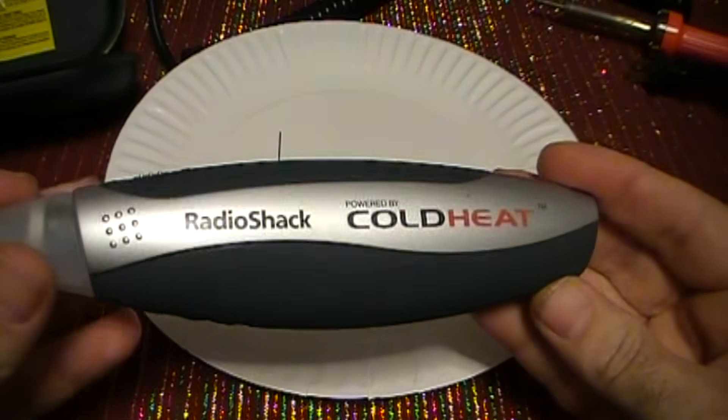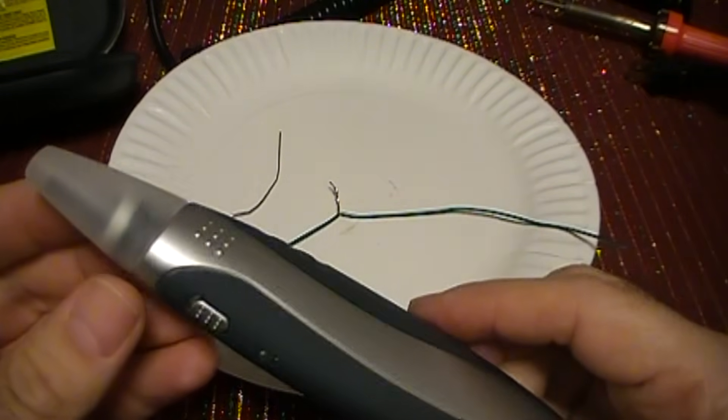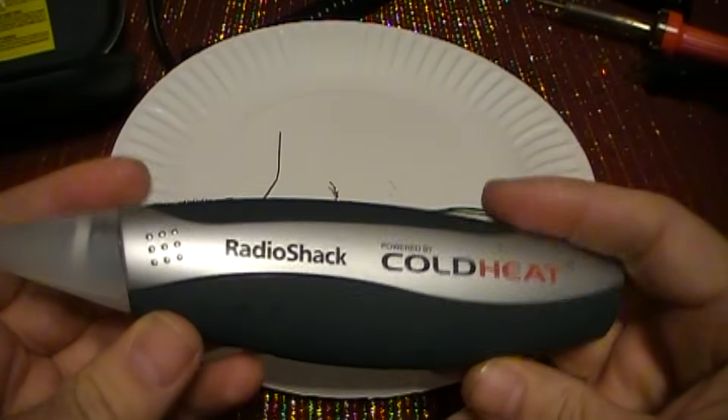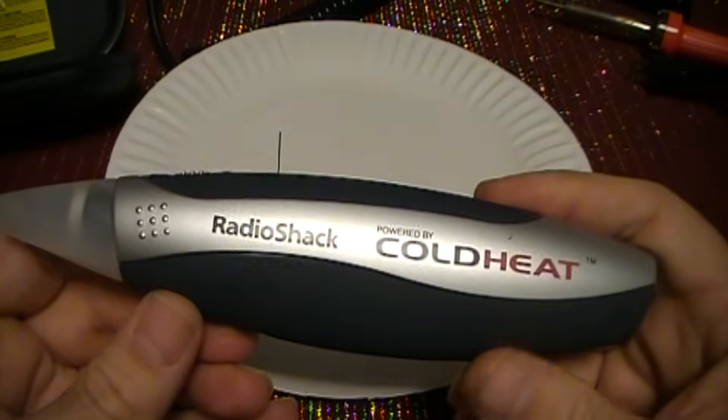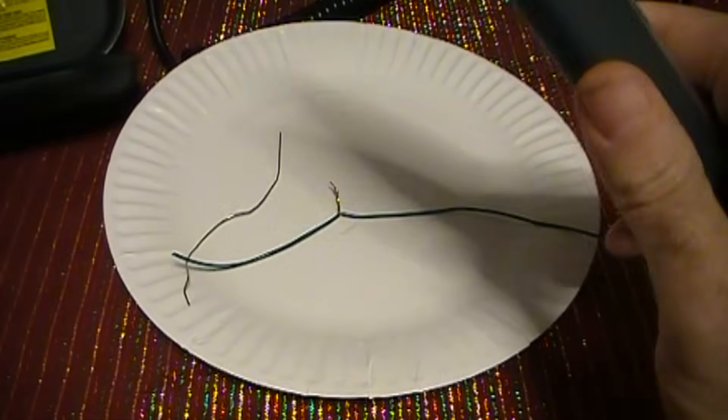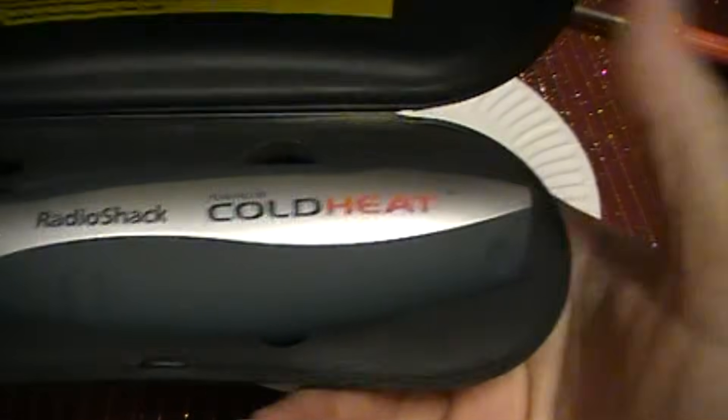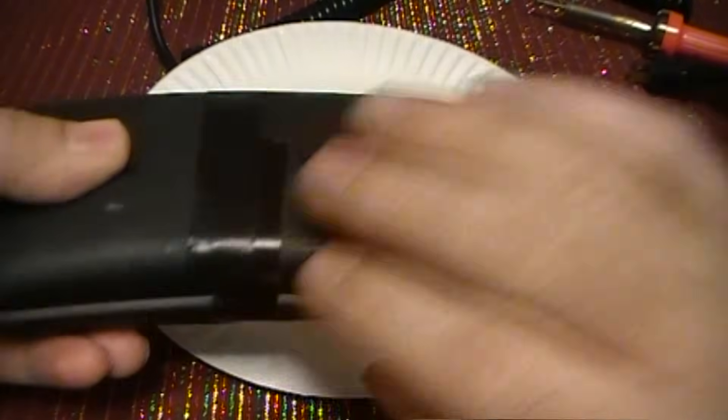So this is the Radio Shack cordless soldering iron powered by Cold Heat technology. If I recall correctly, when I bought it was about $28, $29 somewhere around there. Put it in your toolbox or keep it with your electronic stuff, your wiring and all that. And it has its own little storage case. I broke mine. That's why I have to use this tape.